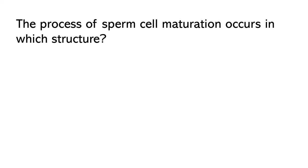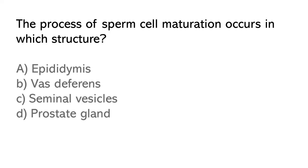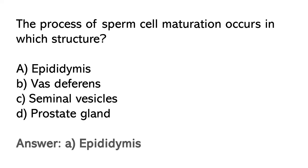The process of sperm cell maturation occurs in which structure? Options: A) Epididymis, B) Vas deferens, C) Seminal vesicles, D) Prostate gland. So the correct answer is option A. Epididymis.